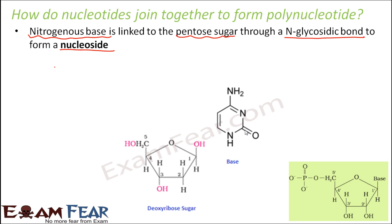So this sugar and this base will get joined by a glycosidic bond. This bond is formed by condensation, that is by removal of a water molecule. This water molecule is removed and a bond is formed between the nitrogen and the hydrogen. So here you can see this is the sugar, this is the base, and they are directly joined here — that joining is due to the removal of water and bond formation.